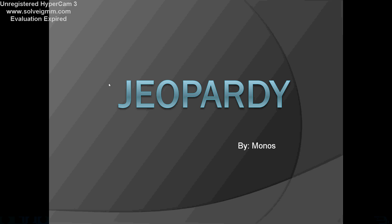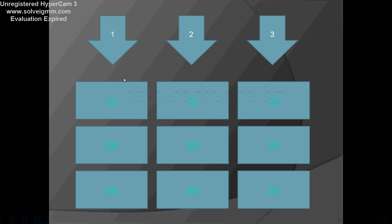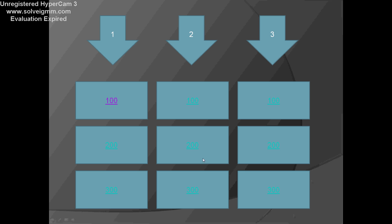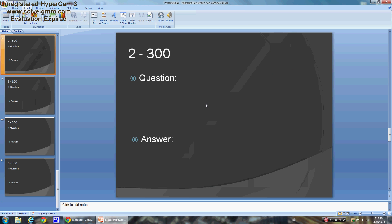Now let's look at it in the slideshow. When we click a value, it's going to take us to that question page. Click 300 — it takes you to 300. The visited links will show as purple, which helps a lot if you're doing a seminar or project.